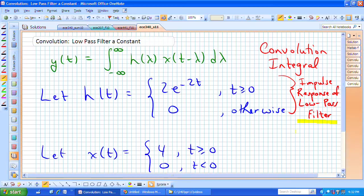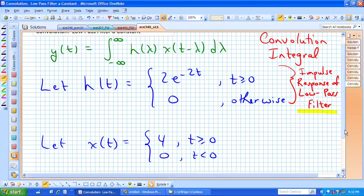We're using 2e to the minus 2t, when t is positive or non-negative. And let's now apply to that low-pass filter a constant.